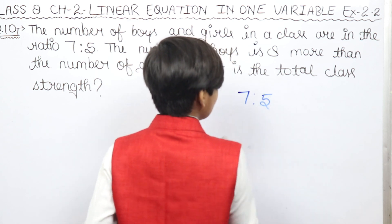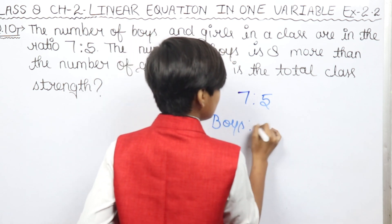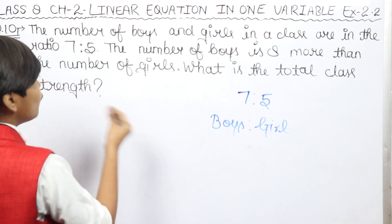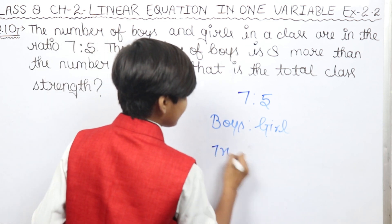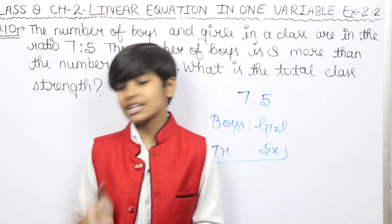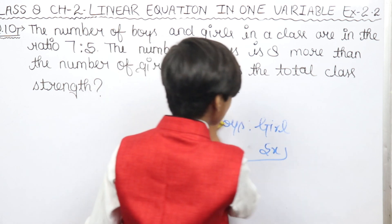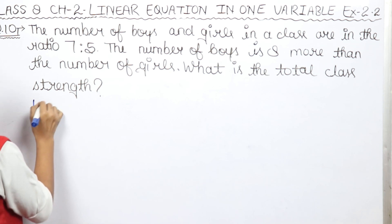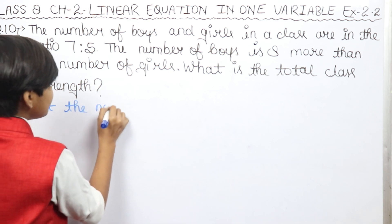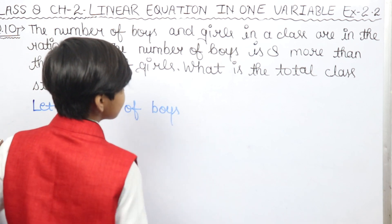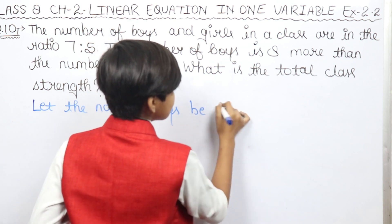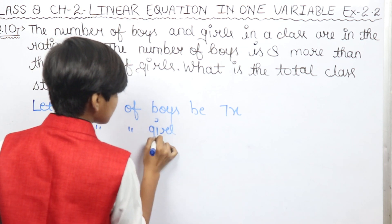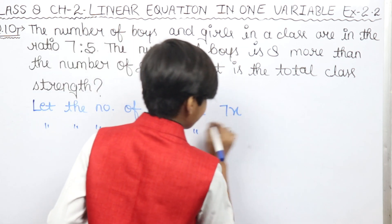The ratio is 7:5, that means boys to girls. Boys are more than girls, so let boys be 7x and girls be 5x. Let's set up the equation: let boys be 7x and let the number of girls be 5x.